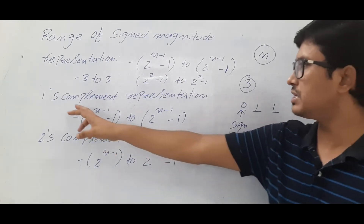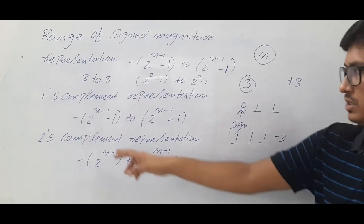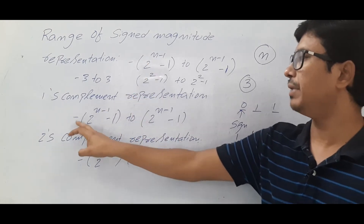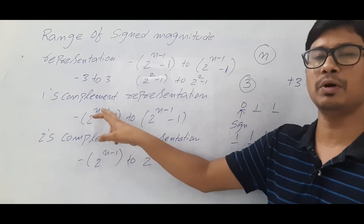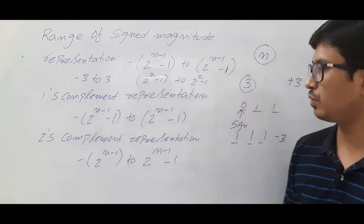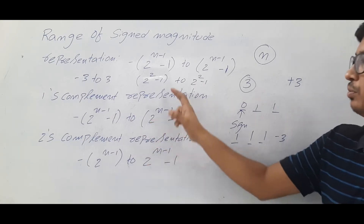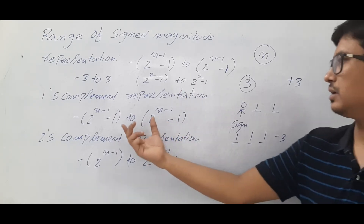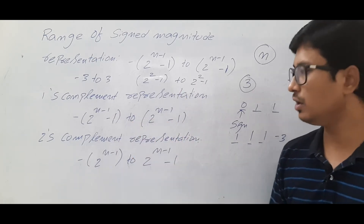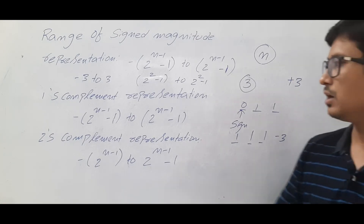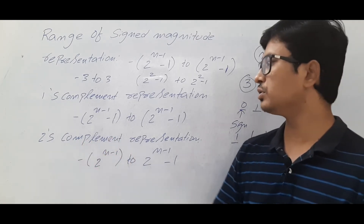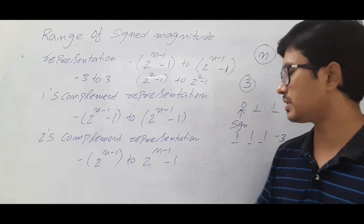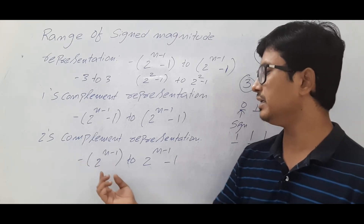The one's complement representation says the same thing: the range is minus 2^(n-1) - 1 to 2^(n-1) - 1 — the same formula as sign magnitude. Now we will come to the two's complement representation.